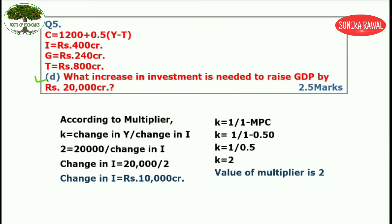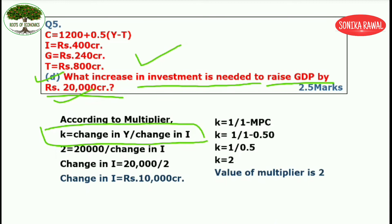Last part of question number 5 is part D — again a tricky question: what increase in investment is needed to raise GDP by 20,000 crores? Recall from question number 2 that the multiplier formula is K equals change in Y divided by change in I. Change in Y is given as 20,000. We need to find change in investment. K can be calculated from K equals 1 divided by (1 minus MPC), where MPC is 0.5, giving K equal to 2.